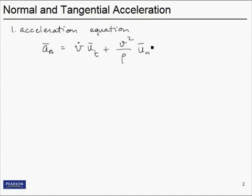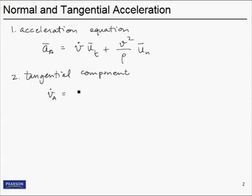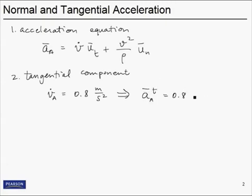Step two is to consider the tangential component. We're given in the problem statement that V-dot at A equals 0.8 meters per second squared. What that really means is that the acceleration in the tangential direction has a magnitude of 0.8 meters per second squared. Written as a vector, that's 0.8 times the unit vector in the tangential direction. So that rate of change of speed is just the tangential component of acceleration — a pretty straightforward result.